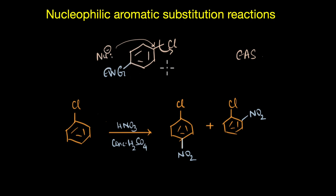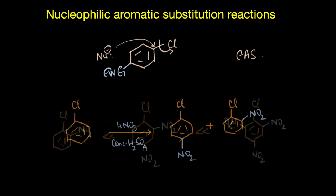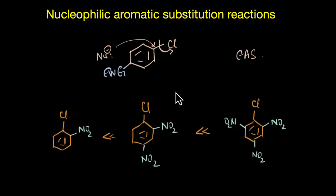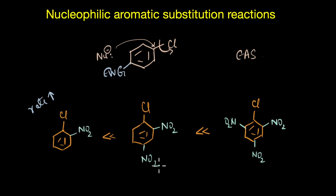Therefore, to make this haloarene undergo a nucleophilic aromatic substitution reaction, it must have a strong electron withdrawing group attached to the ring. In fact, the more the number of electron withdrawing groups present in the ring, the greater would be the rate of the reaction. The rate of the reaction substantially increases with more nitro groups attached to the ring, as you can see here.